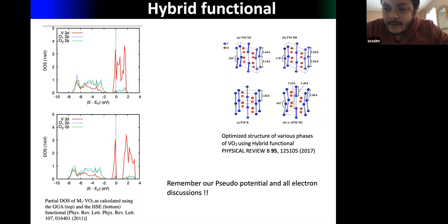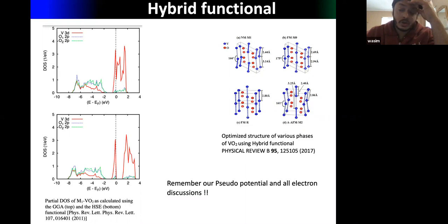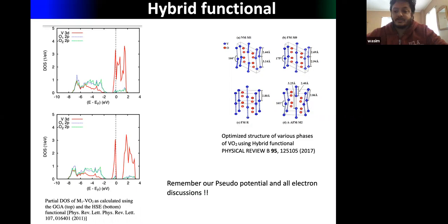Hybrid functionals are also very good. They were first applied to VO₂, which is considered a very strongly correlated system. A simple GGA calculation gives a metallic solution — which is incorrect — but the hybrid functional gives an insulating solution for the M1 phase, which is correct.